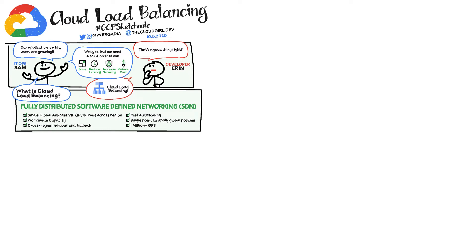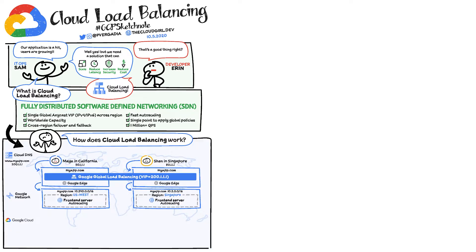It's a fully managed software-defined networking solution that supports millions of requests per second with a single global Anycast virtual IP address. So if users from different locations are requesting your application, you don't have to rely on DNS load balancer to map the client IP to the VIP, since it is a single Anycast VIP across the globe.